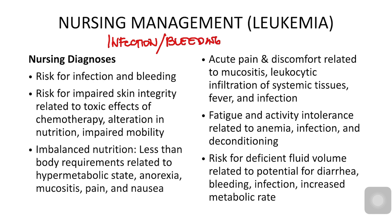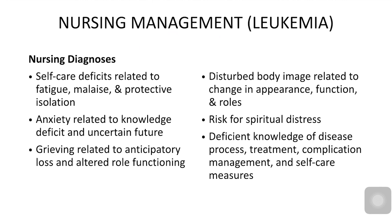Self-care deficit is due to fatigue, malaise, and protective isolation. Leukemia patients are given reverse isolation — unlike regular isolation where the sick and infectious patient is removed to protect others, reverse isolation protects the immunosuppressed patient from external infection. Grieving or anticipatory loss, disturbed body image due to changes in appearance and roles, spiritual distress, and knowledge deficit are also key nursing diagnoses.